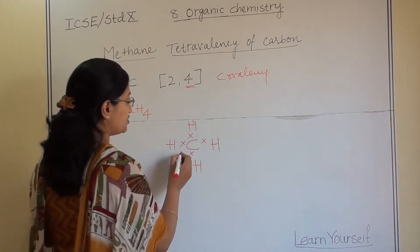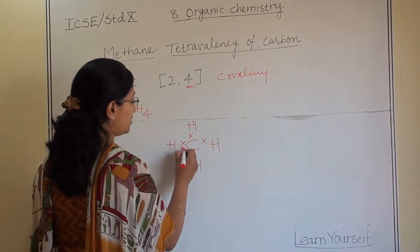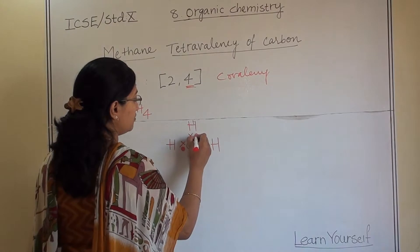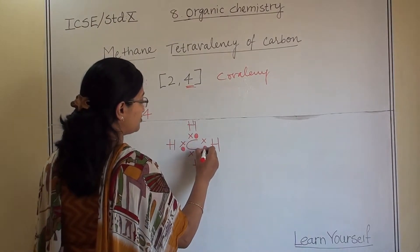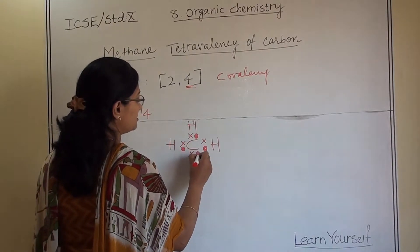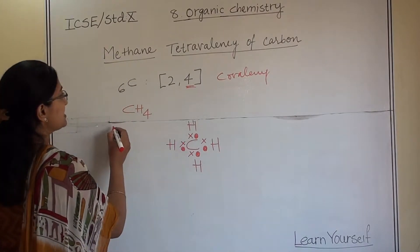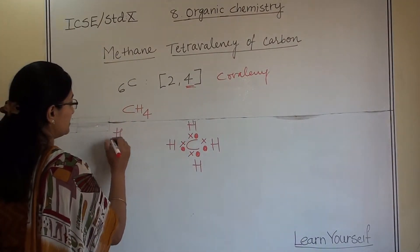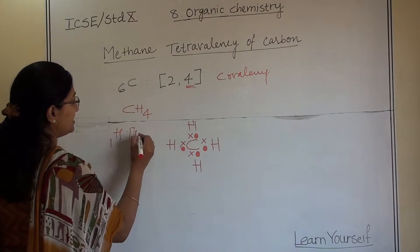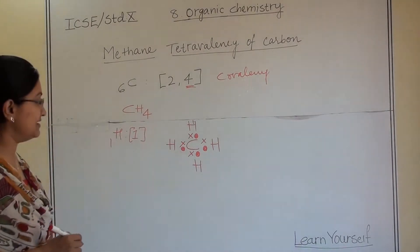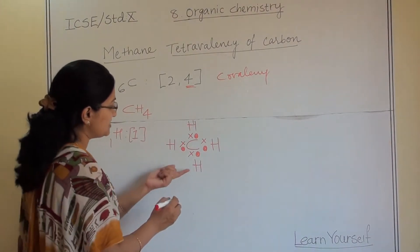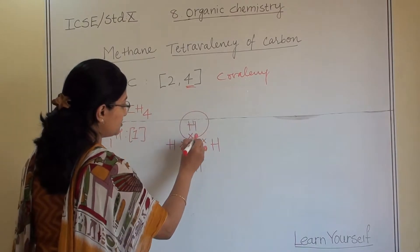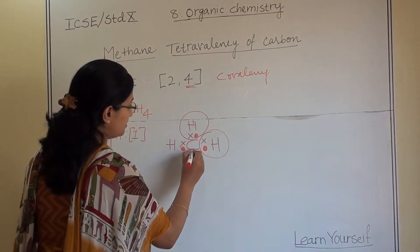And these hydrogen atoms will share one electron each from their valence shell. Why? Because hydrogen's atomic number is 1 and it has only 1 electron in its valence shell. So if you see here, the structure will look like this.